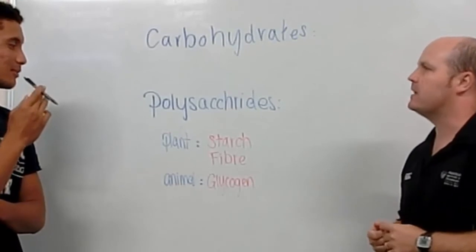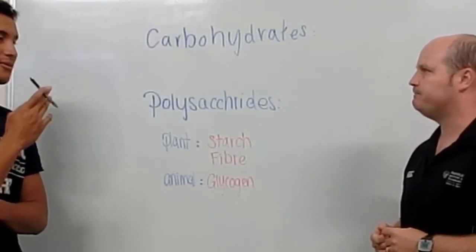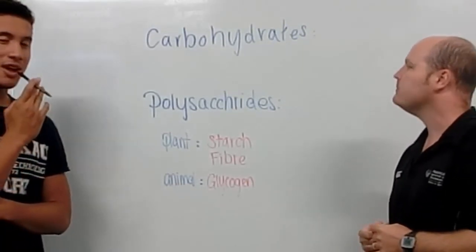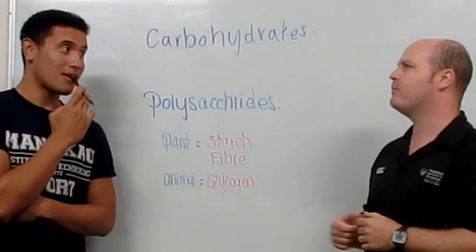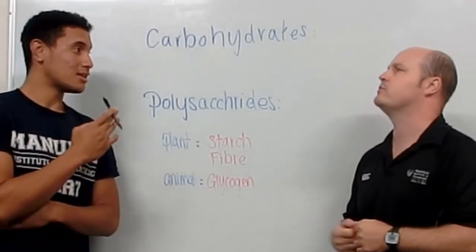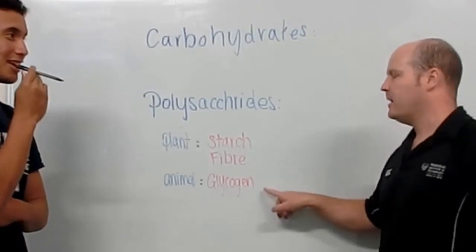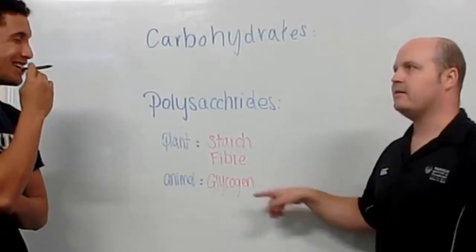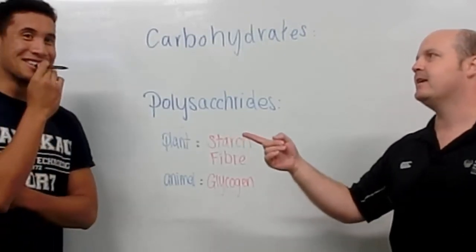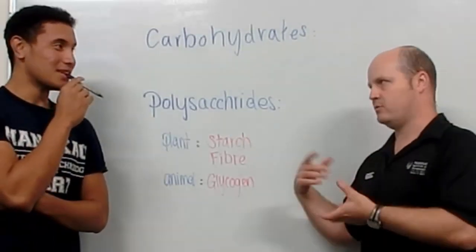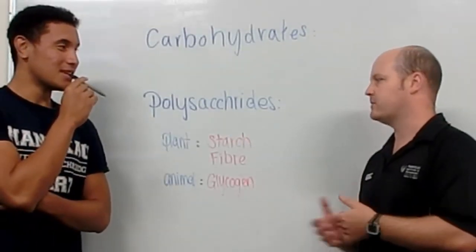Where else can we get polysaccharides? From animals. And what are our animal sources? Glycogen. And glycogen is just stored glucose in the muscle.